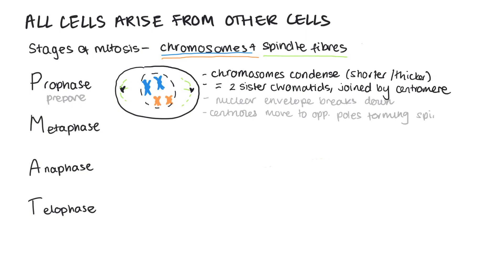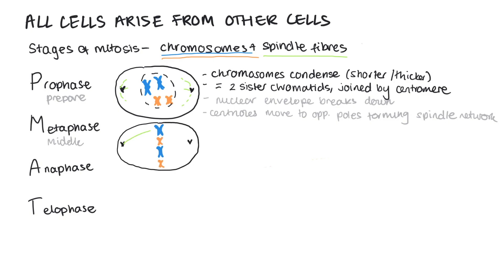In metaphase, we can think of the M standing for middle. During metaphase, the chromosomes align along the equator of the cell — just the middle of the cell — and the spindle fibres now attach to the chromosomes by their centromeres.